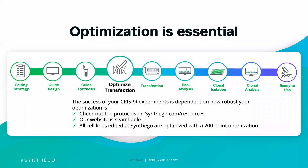As a reminder, every cell line that we edit at Synthego is optimized with that 200-point optimization to really ensure that we can enable the best editing efficiency possible in the correct cell line for your work.